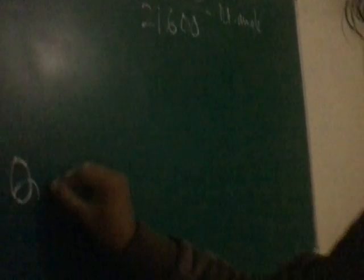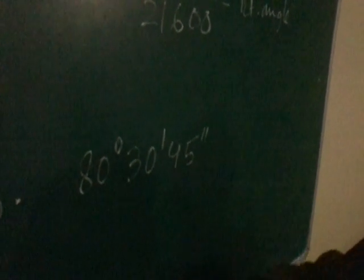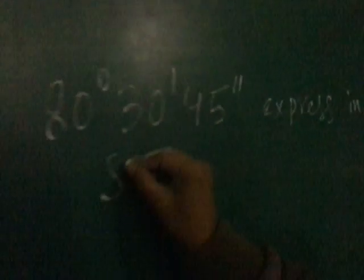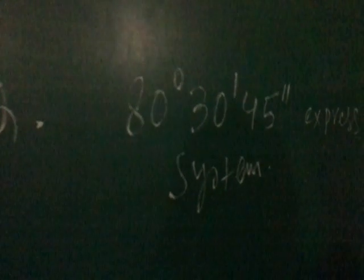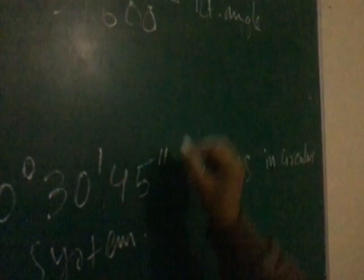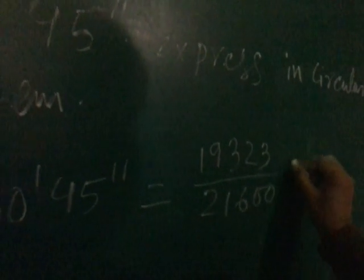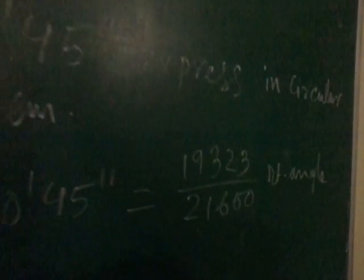Look — write down the question. If the question is: 80 degree, 30 minutes, 45 seconds, express in the circular system. We have already got that the value of 80 degree, 30 minutes, 45 seconds equals 19323 divided by 21600 right angle.